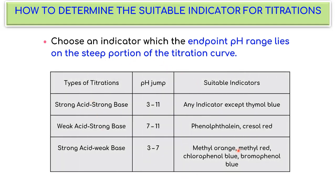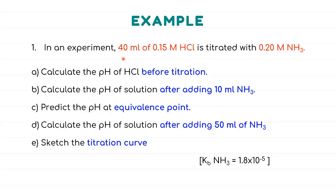Here are examples of suitable indicators for each type of titration. Now let's try a calculation example on acid-base titrations. In an experiment, 40 mL of 0.15 M HCl is titrated with 0.20 M NH₃. The substance with a known volume will be the analyte, and the substance with an unknown volume will be the titrant. We need to calculate the pH of HCl before titration — in other words, the initial pH — and the pH after adding 10 mL of NH₃.